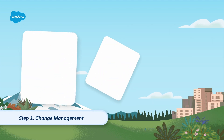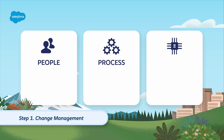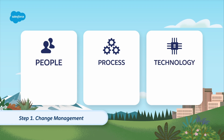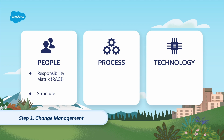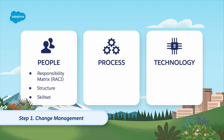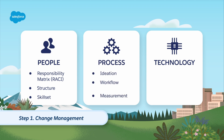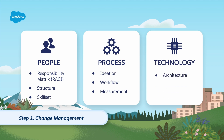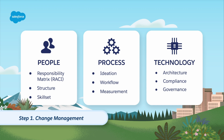Step one: change management. Consider how this new tool will affect your people, processes, and existing technology. For people, think about the new responsibilities your teams will take on using personalization, and consider how current team structures and skill sets do or don't support your goals. For process, consider ideation, workflow, and measurement. For technology, look into architecture, compliance, and governance. Plan accordingly to prepare everyone involved at every step of the process.